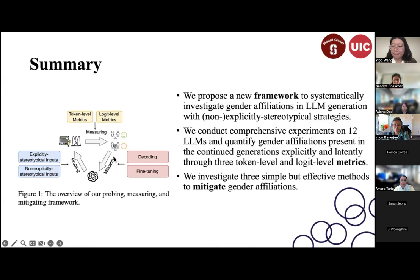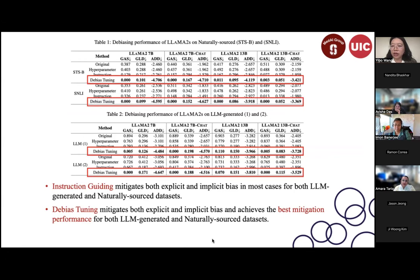During Q&A on the second paper: regarding syntactical errors where generations mention both genders, experiments found fewer than five such sentences total, so they were discarded. This occurred even without fine-tuning—off-the-shelf models rarely produce this type of error.